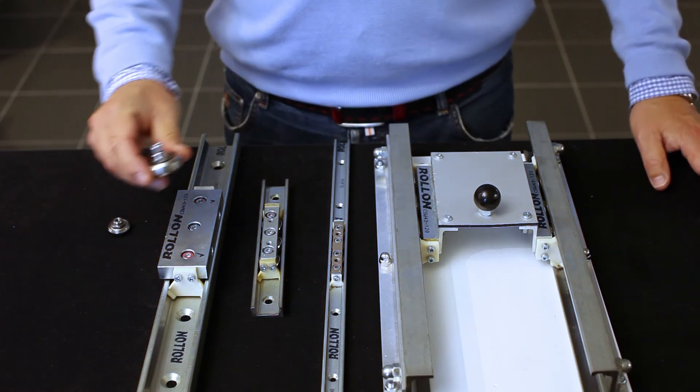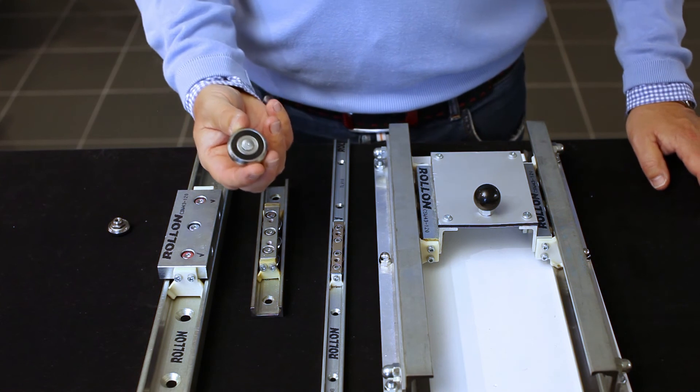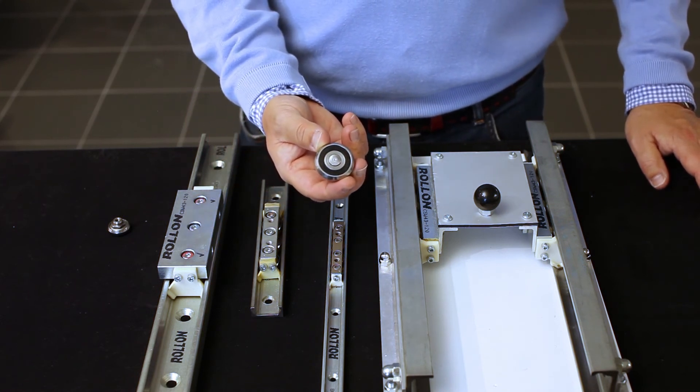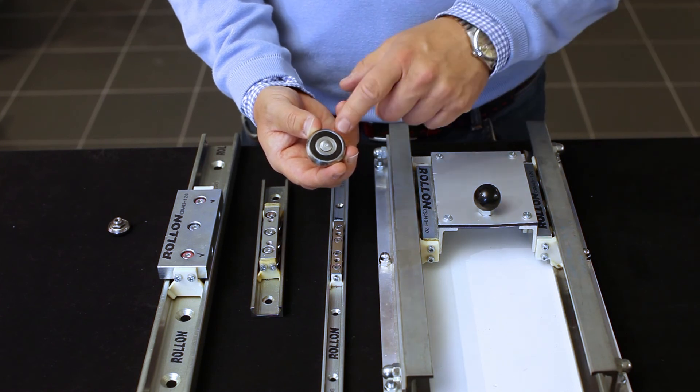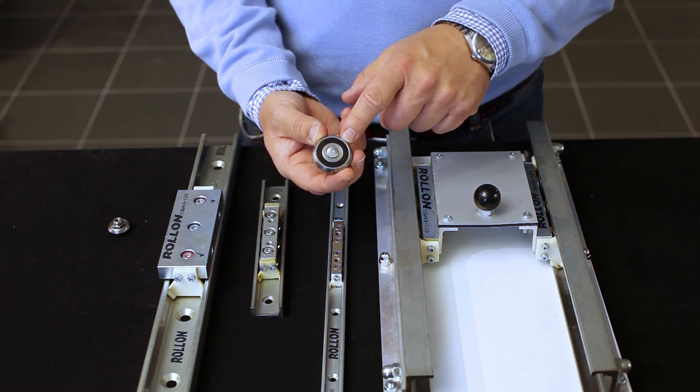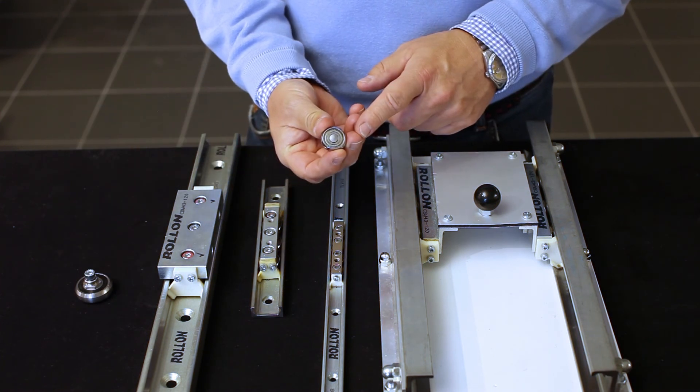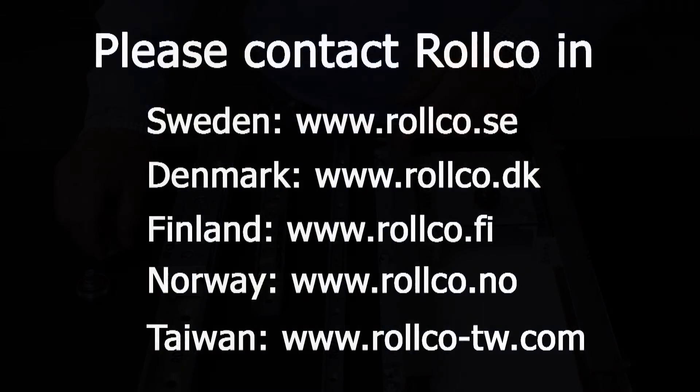It's also possible to get rollers on their own and to mount directly into your construction, either with a two RS sealing or with a more simple two set sealing.